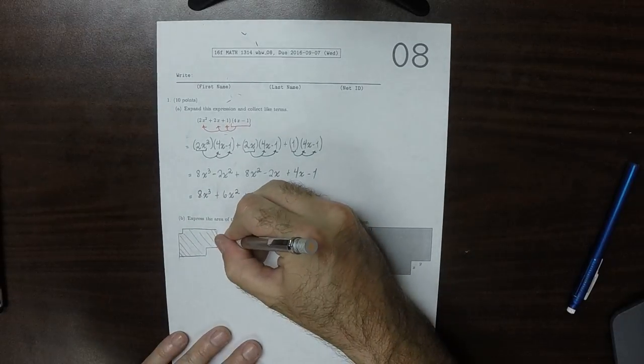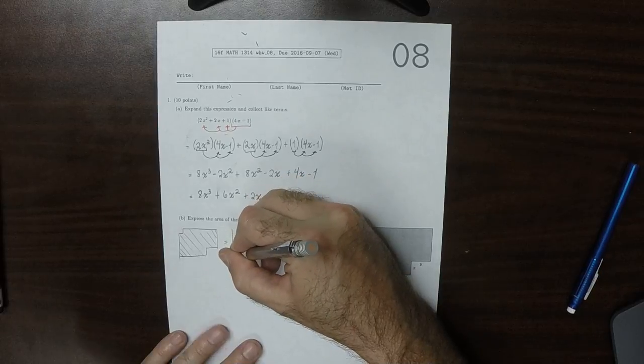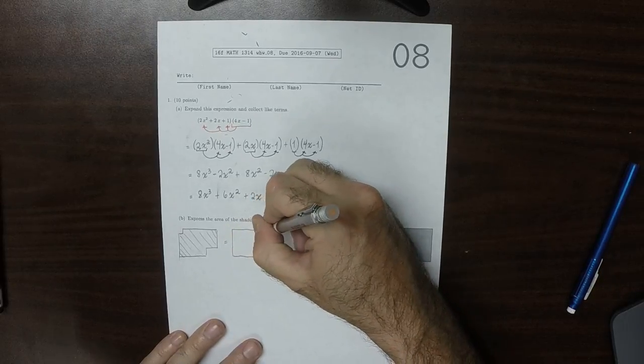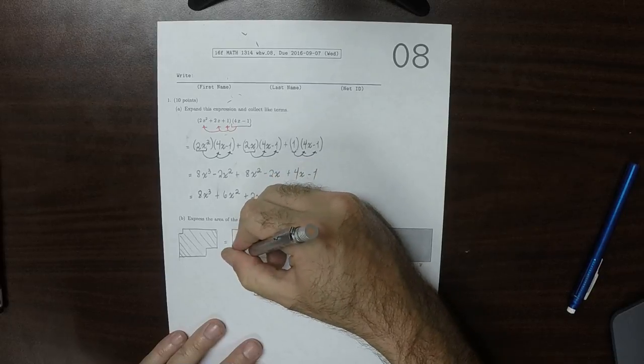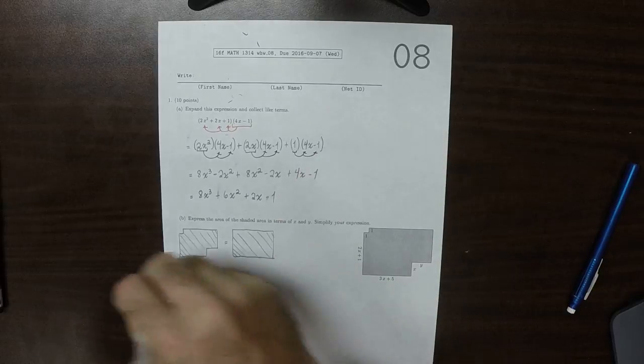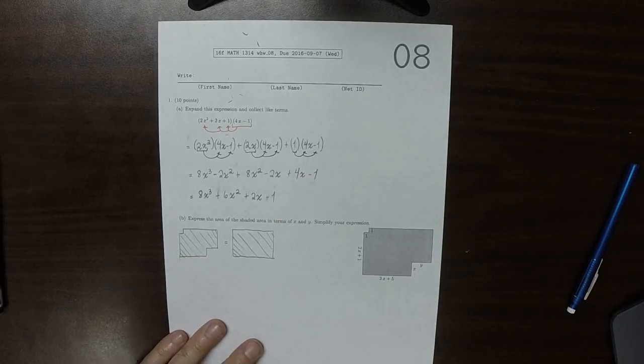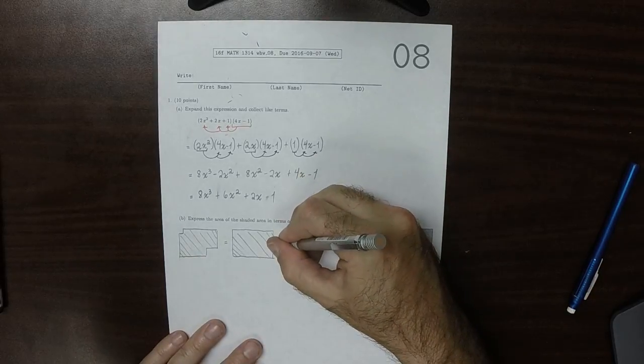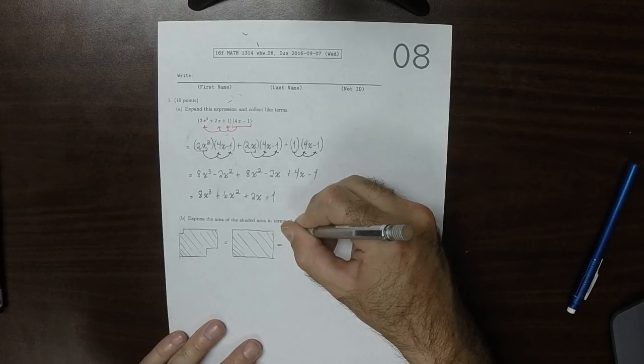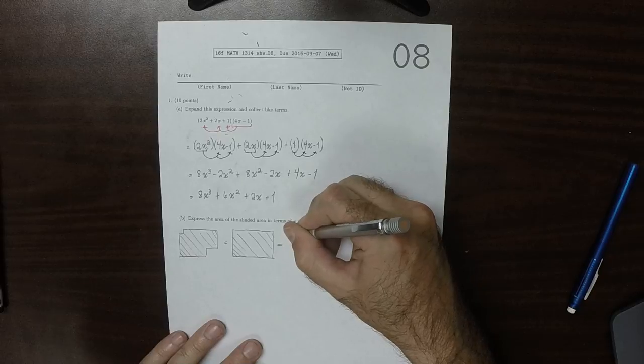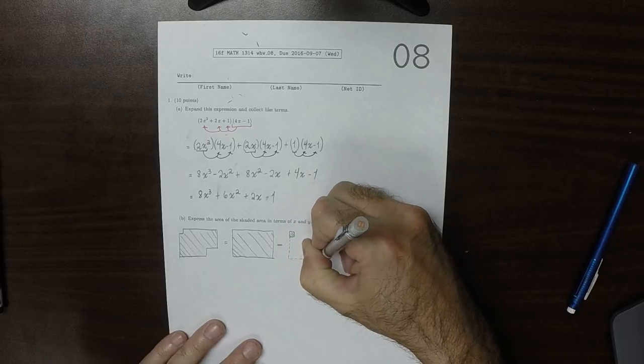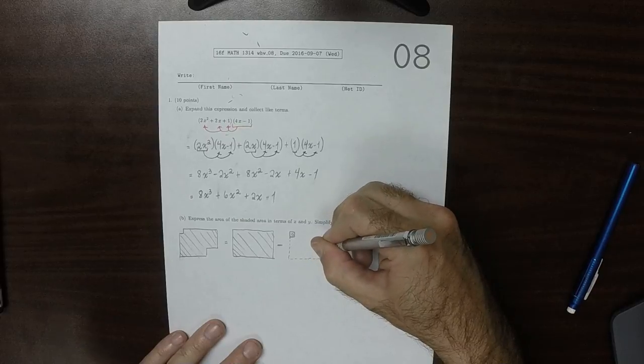Well, that would be this whole rectangle. If we were to fill in the missing corners, we could just compute the area of one big rectangle, and then I'll subtract away the two little rectangles. So minus this little rectangle and this little rectangle.